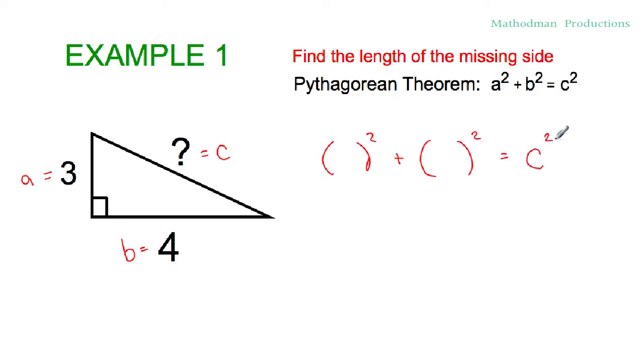We don't know what c squared is, so we can label that c squared, and then put the numbers in. So instead of a, we can replace it with a three, and b is four.